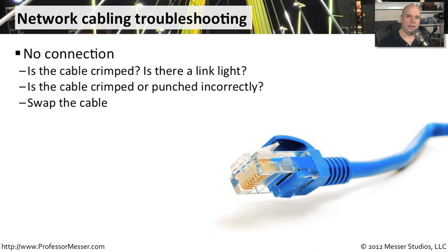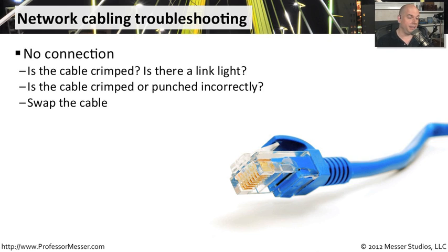If we're not getting any connectivity at all — no link light, no connection, nothing ever lights up that port so we can send data — then we might really have a physical problem with that cable. We need to visually examine it: is there a crimp or a bend in the cable? Are we getting a link light or not? If we get no link light, we want to look at the specific cable configuration. If we are getting a link light, maybe the problem is with the crimping or the type of connector put on the end. We might want to pull it out, look at the connection, and see if the wires are really in the right pins at the very end of this RJ45 cable — that's a very common place where mistakes are made.